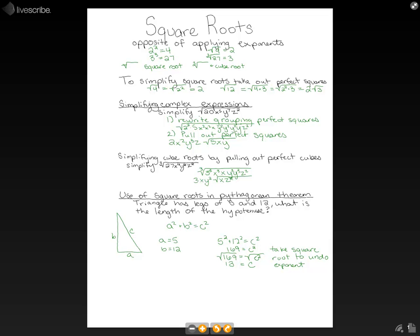So our other side length, our hypotenuse, is 13. So that is one way to use square roots in real life.